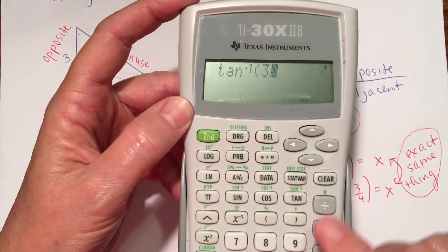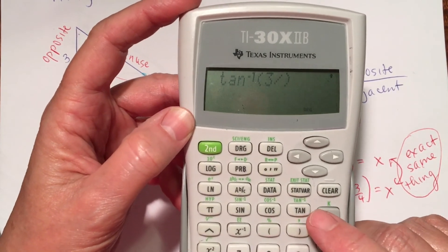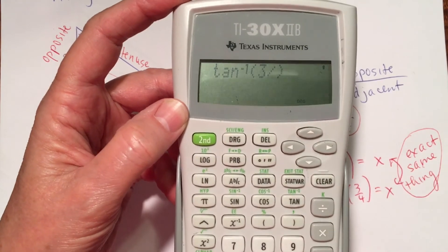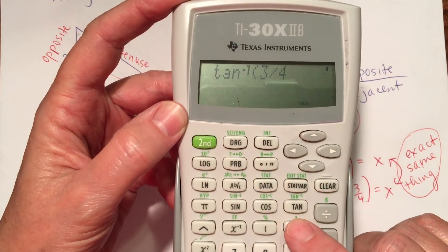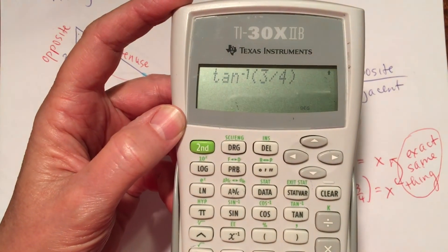Inverse tangent, 3 over 4. Well, I forgot to put the 4. Let me back up and do that. 3 over 4, close parentheses, and press equals.